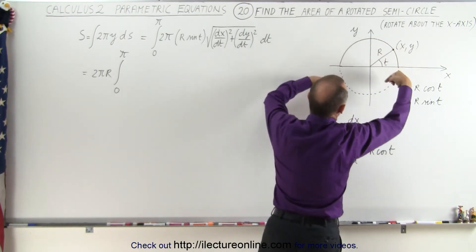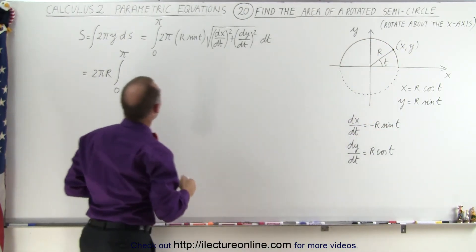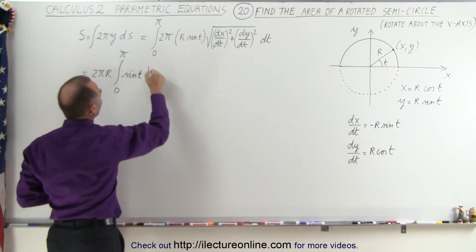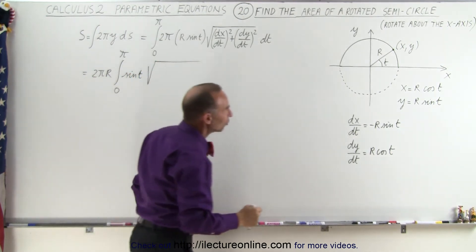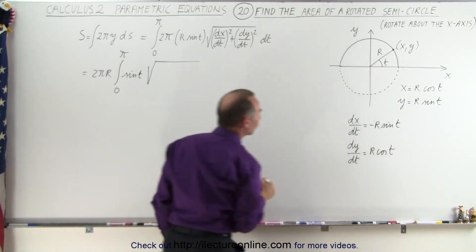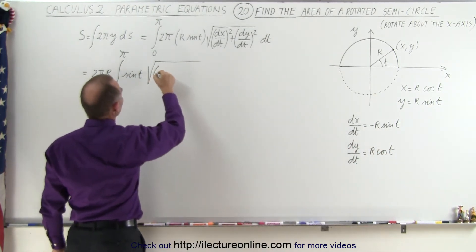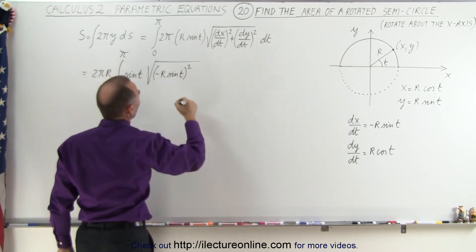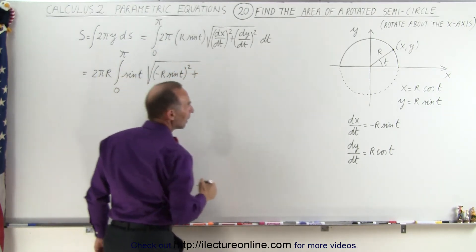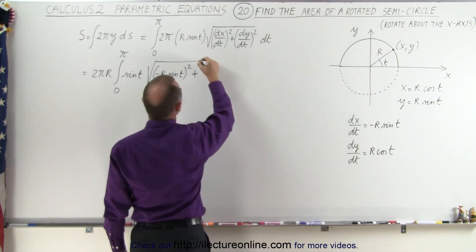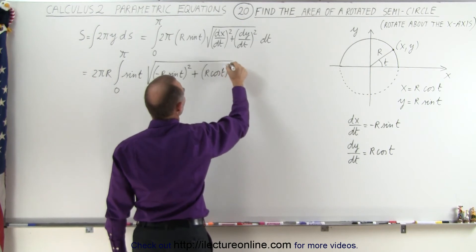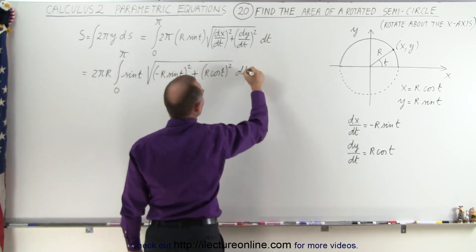We multiply times the sine of t times the square root of (dx/dt)². That would be this quantity squared, minus r sine t quantity squared, plus dy/dt, that would be r cosine t squared. So r times the cosine of t quantity squared, and we still have our dt here.